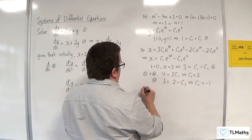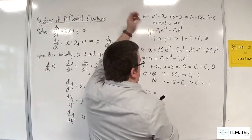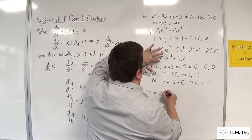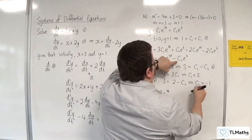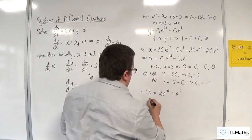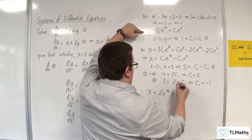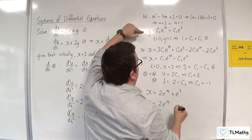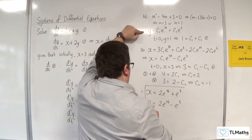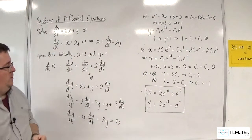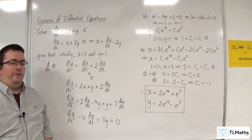So therefore, x is equal to 2e to the 3t, take away minus 1, so plus e to the t. And y is equal to 2e to the 3t, then take away e to the t. And they are my solutions to the original system of differential equations.